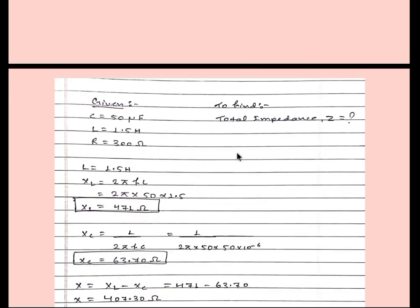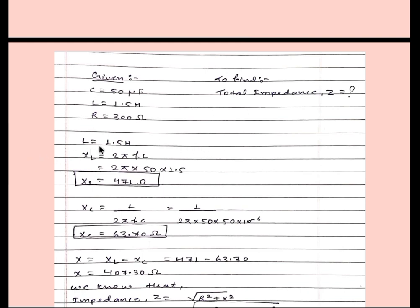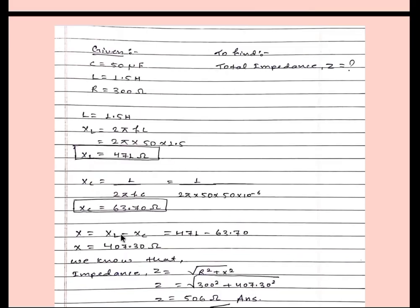L is equal to 1.5 henry. We have one simple formula: XL is equal to 2 pi f L. From here we can get XL that will be 471 ohm. Similarly we have formula Xc is equal to 1 upon 2 pi f C. From here we can get Xc. And we know that X is equal to XL minus Xc.